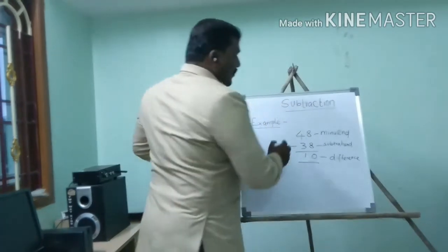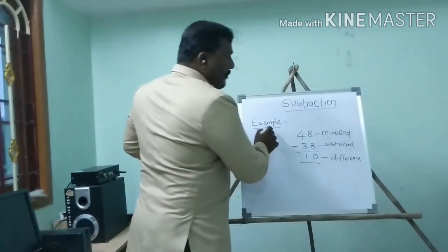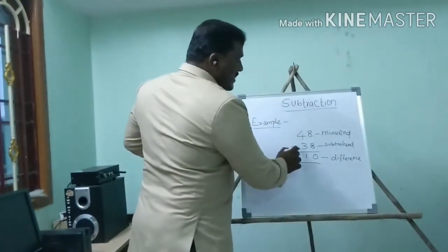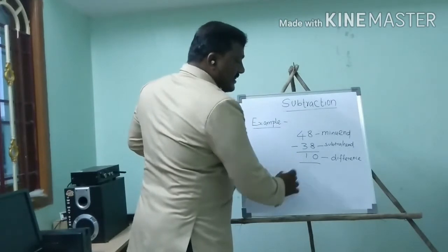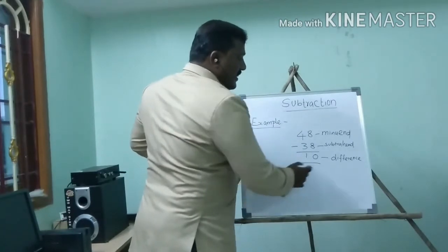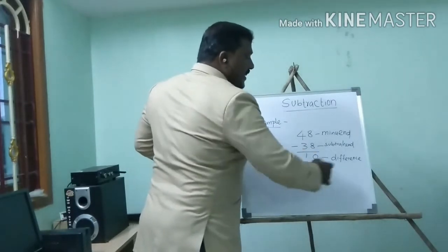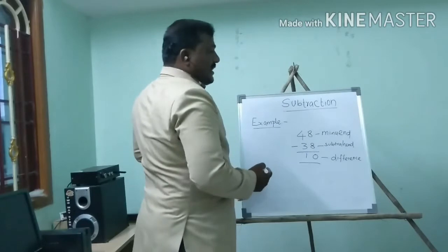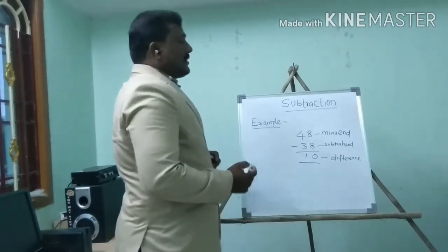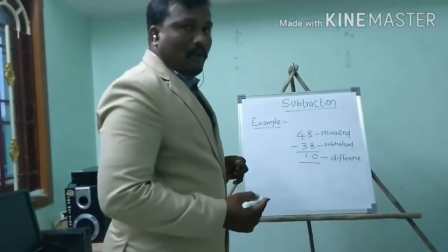This is the minuend, this is the subtrahend, and the answer result is difference. These 3 important properties are called subtraction properties.